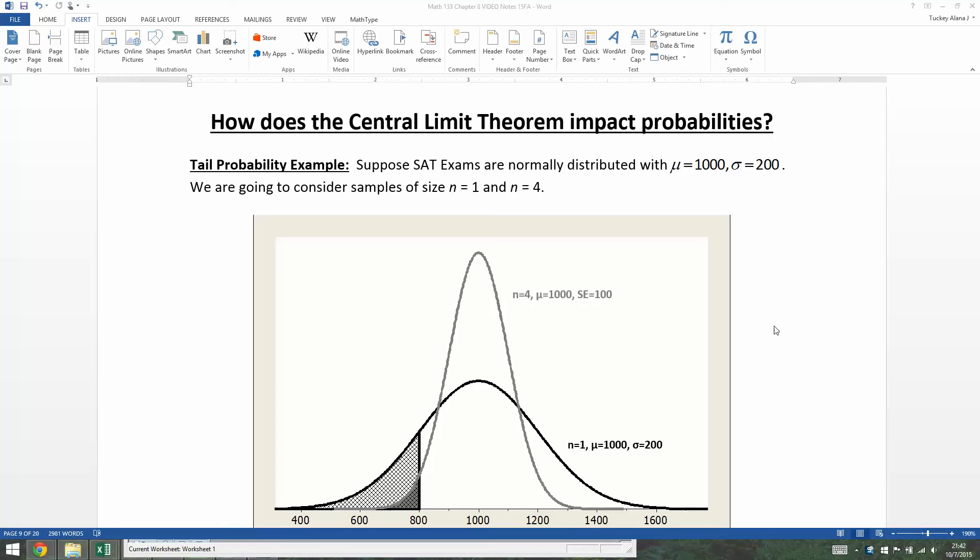Now that we understand how the central limit theorem will affect our distribution shapes, we want to think about what impact this is going to have on our probability calculations. We're going to start off with tail probabilities—those are probabilities that are in the tails of the normal curve. From this drawing we have down here, we're talking about being over on the left tail, over on the right tail, off on the edges.